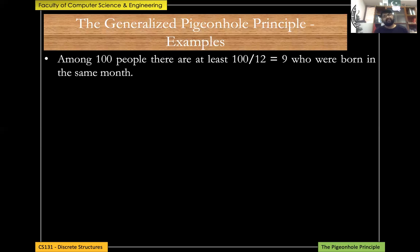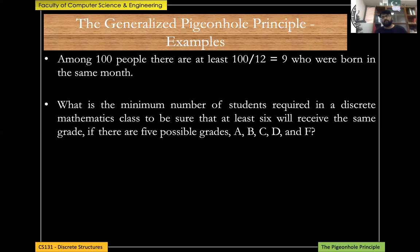Since there are 12 months in a year, if 100 people are present in a group, then 100 divided by 12 is 8.5, and taking the ceiling gives 9. So at least nine people share the same birth month. The answer is 8-point-something but you need one more person to guarantee that at least nine people share the same month of birth.